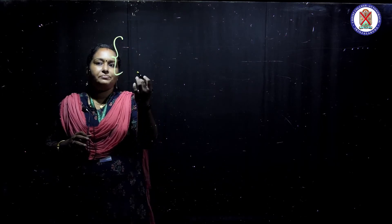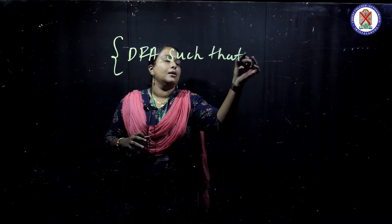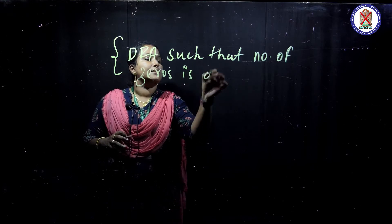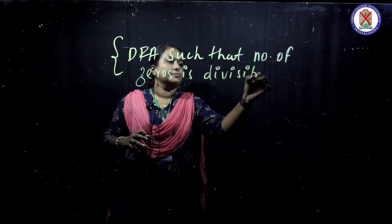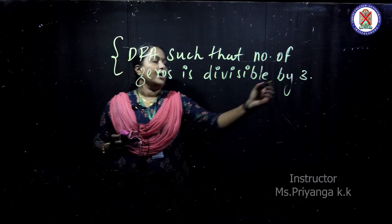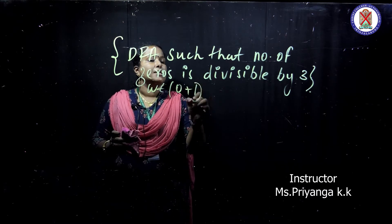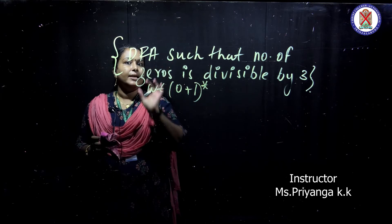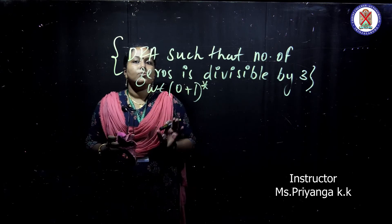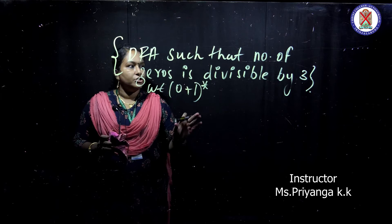The problem is: design a DFA such that the number of zeros is divisible by 3. Our input alphabet w consists of (0+1)*, meaning strings of zeros and ones. We are designing a DFA such that the number of zeros in the string is divisible by 3.